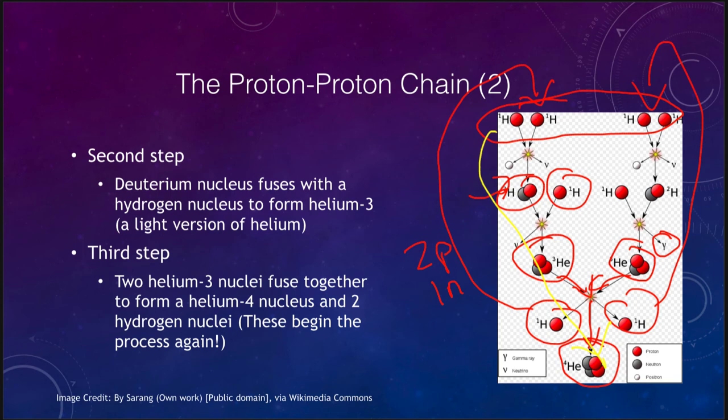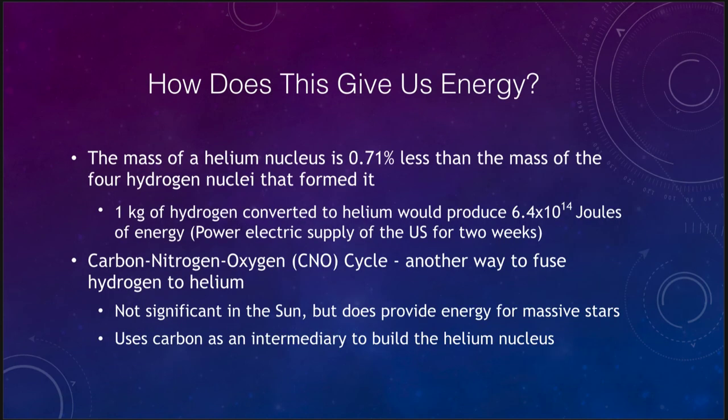How does this give us energy? The difference in the mass of the helium nucleus and the mass of the hydrogen nuclei that formed it is about a little less than one percent. We take that one percent of mass that is converted to energy by E equals MC squared. One kilogram of hydrogen would be able to provide the electric energy of the U.S. for two weeks.